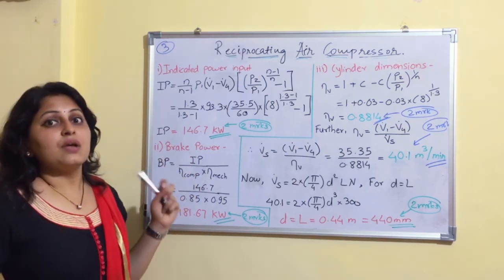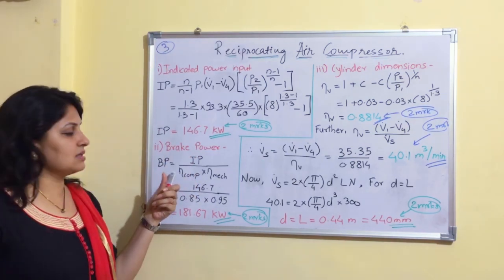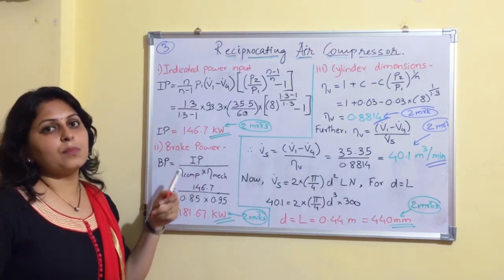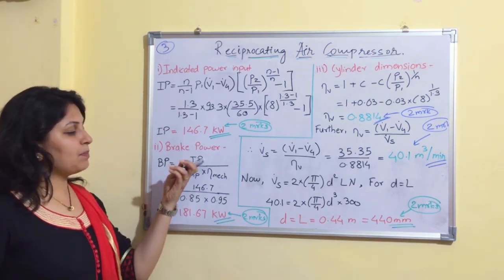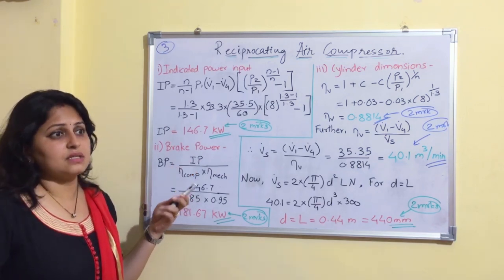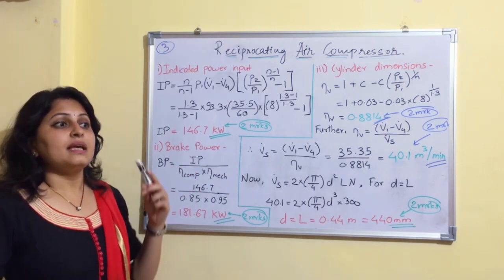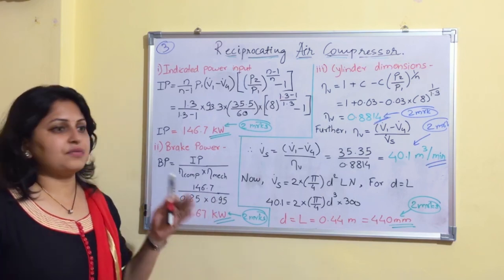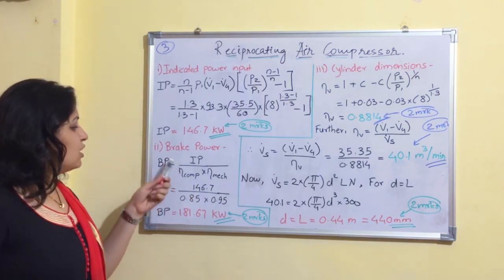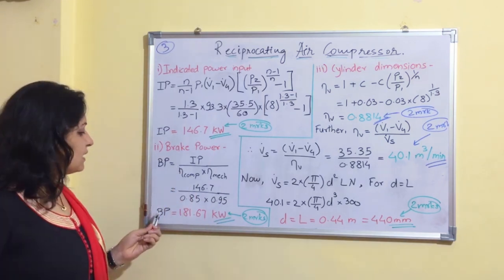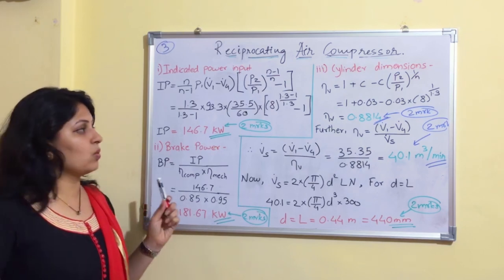The next term is brake power. Since mechanical efficiency = indicated power / brake power, we get brake power = indicated power / (mechanical efficiency × compressor efficiency). Dividing by both efficiencies (0.85 × 0.95), we get brake power = 181.67 kW.